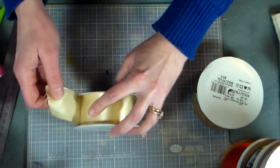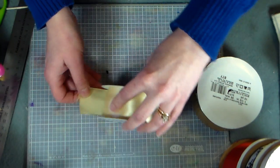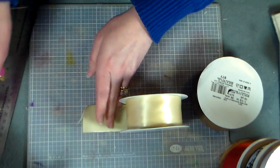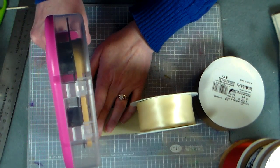If you don't want to use pins which can leave little holes in your ribbon and if you're not careful it can leave rust spots if you use the wrong kind of pin, you can simply use some adhesive like this ATG adhesive.